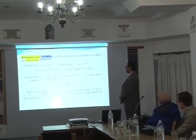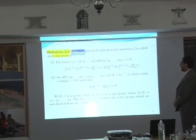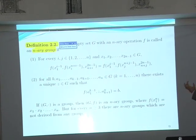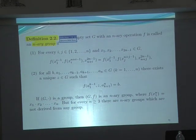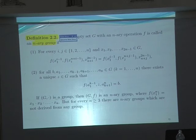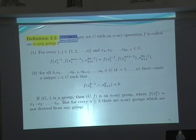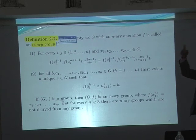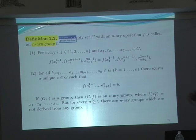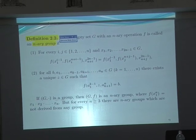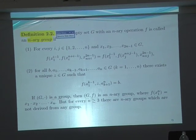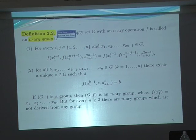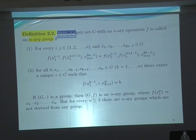We have a generalization of the associative law. We have an n-ary operation instead of a binary operation. We consider G cross G cross ... cross G to G. And we have the equation that for every a and b the system is solvable.